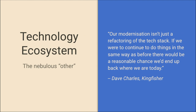The last area is the technology ecosystem. Kingfisher, the UK equivalent of Lowe's or Home Depot, had one of their architects, Dave Charles, write a great article on Medium about their journey towards a more modern stack. He said: 'Our modernization isn't just a refactoring of the tech stack. If we were to continue to do things in the same way as before, there'd be a reasonable chance we'd end up back where we are today.' They built a highly modern decoupled stack that was great for two years, then got slower and more challenging, because they didn't actually change the ways they did development or approached feature releases.